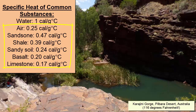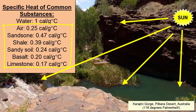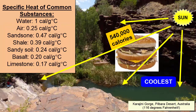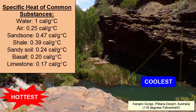Each type of rock has a different specific heat. In this image of the Karagini Gorge in the Pilbara Desert of Western Australia, the temperature is 116 degrees Fahrenheit. If you were in this environment, where would you go to cool down? First choice: the water. Second: the vegetated areas. The calories in a Big Mac would raise 540 liters of water 1 degree Celsius, but for 540 liters of the iron-rich shale in this picture, those same calories would raise the temperature about 5 times more. That's why, if walking through this area barefoot, your feet could get seriously fried en route.